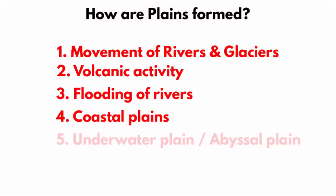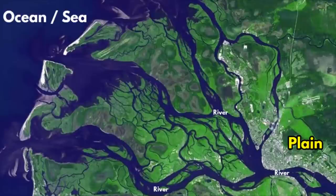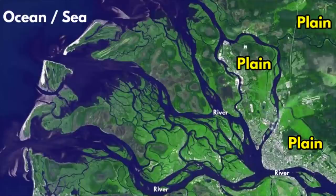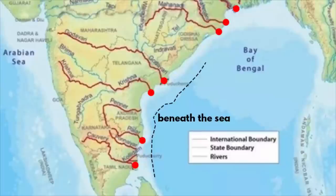Another kind of plain is the coastal plain. Many rivers, when they finally end up in a sea or ocean, deposit a lot of sediment near the entry point. As the sediment builds up, it slowly rises above sea level, forming a coastal plain. A good example is the eastern coastal plain of India along the Bay of Bengal. Large rivers such as the Mahanadi, the Godavari, the Krishna and the Kaveri have deposited large volumes of sediments near the coastal area. The eastern coastal plain extends deep into the sea water of the Bay of Bengal. These coastal plains are also referred to as beach.